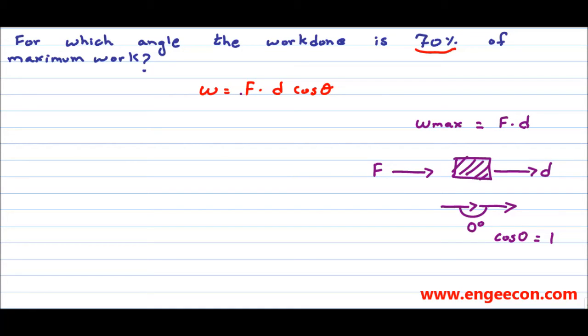Here we have F dot d, so we can replace it with maximum work. The work equation becomes W equals F dot d cos theta, which is W_max cos theta. From the question, the work done is 70% of the maximum work.